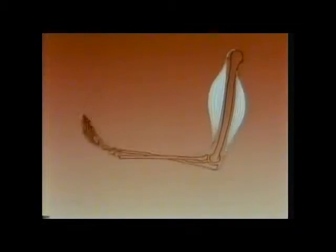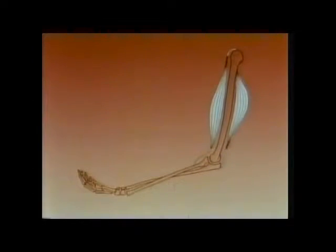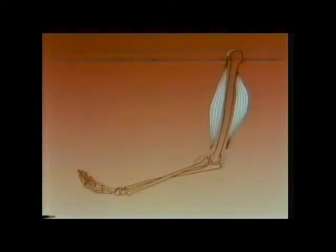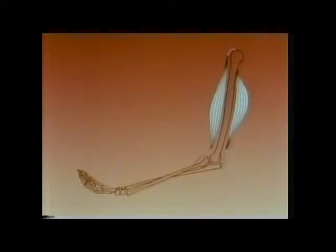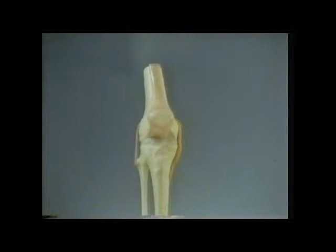To straighten the arm again, nerve impulses order the biceps to relax, lengthen, and the triceps to contract. There are always muscles working in opposition, one contracting while another relaxes, so that we get nicely balanced movement. Muscles attached by tendons to the bones move our bone levers, contracting or relaxing, to cause the movements we intend to make.